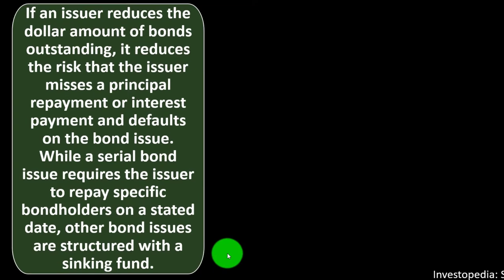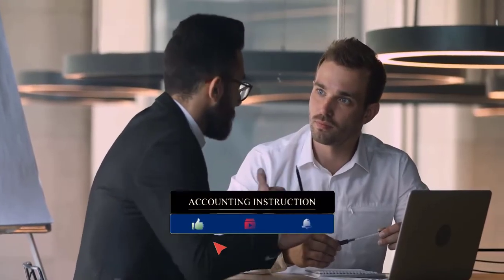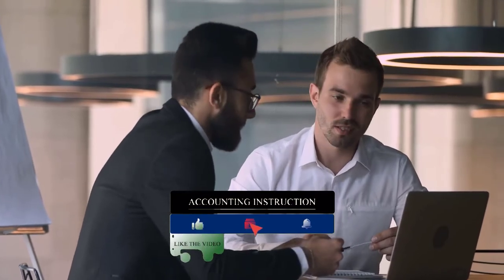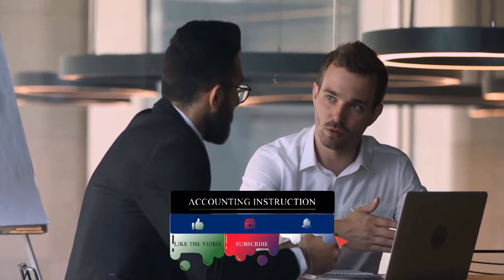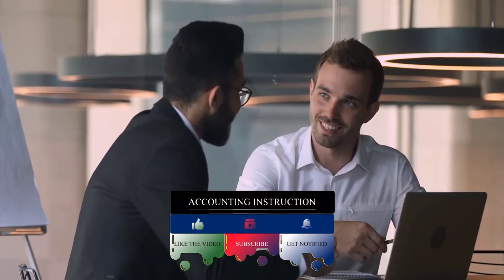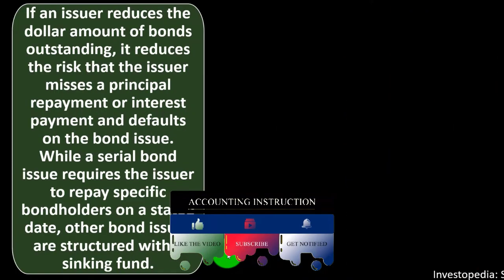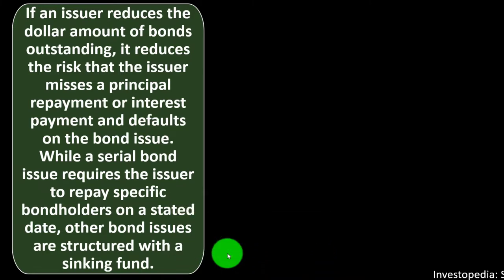Understanding serial bonds: if an issuer reduces the dollar amount of bonds outstanding, it reduces the risk that the issuer misses a principal payment or interest payment and defaults on the bond issue. This means not paying an interest payment or not paying, for example, the maturity of a bond at the end of the term. While a serial bond issue requires the issuer to repay specific bond holders on a stated date, other bond issues are structured with a sinking fund.